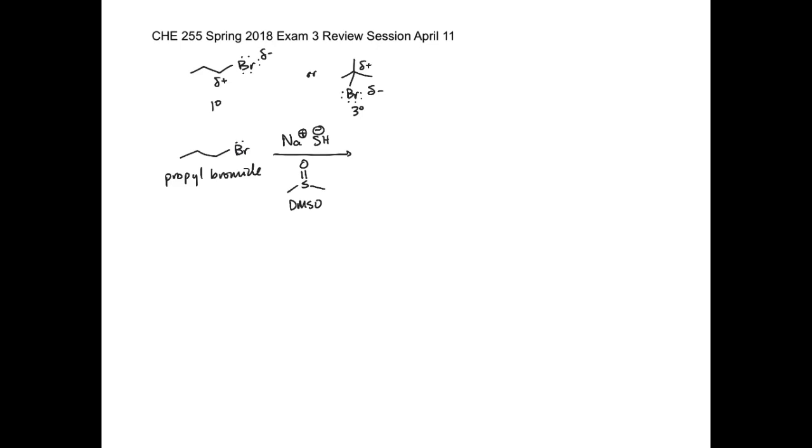The reason why it's important to draw in this delta plus, delta minus, is that you have to match the polarity. Sulfur is right below oxygen, so when it's negatively charged it has three lone pairs. The negative charge is going to be attracted to the positive charge. You're going to form a carbon-sulfur bond and then this bond leaves. So that would be the arrow-pushing mechanism.